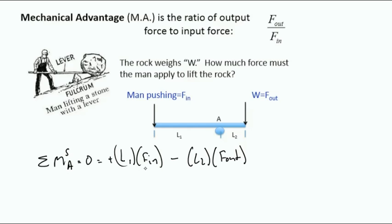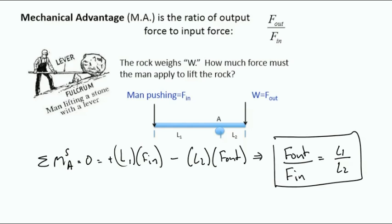Taking the moments about A, we find that L1 times Fin minus L2 times Fout is equal to 0. Solving for Fout over Fin, or the mechanical advantage, we find that it is equal to L1 over L2. It is advantageous to put yourself at a high mechanical advantage, therefore you have a high output force for a small input force. This suggests that L1 should be increased while L2 should be decreased to increase the mechanical advantage of this lever.